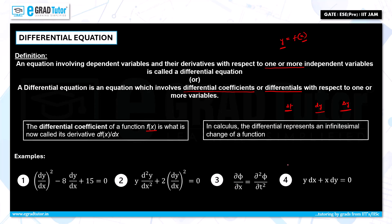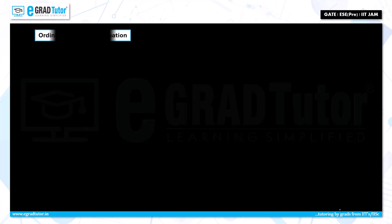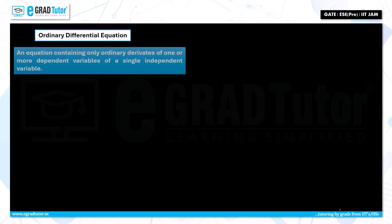Next, y dx plus x dy equal to 0 — these are differentials. This is a differential in x and this is a differential in y, so together they make a differential equation. With this basic understanding, now let us see what is an ordinary differential equation.